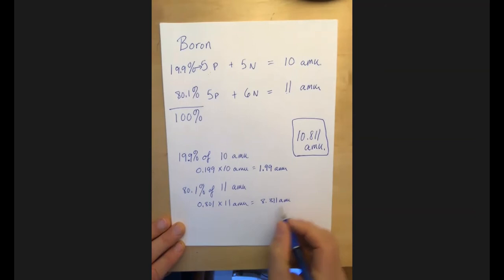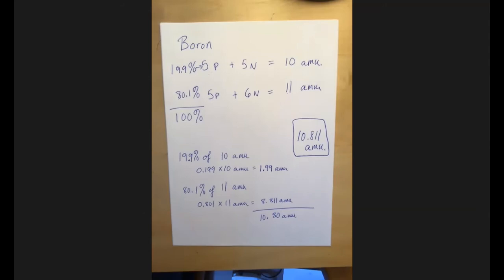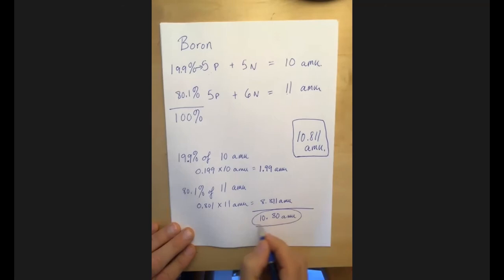And if I add those two together, I get 10.80 AMU. Which is perilously really stinking close to the number that we are targeted.